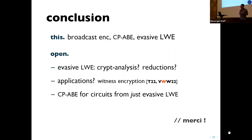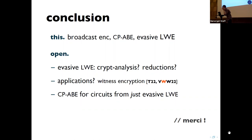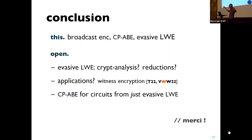We have plenty of time for questions. One question: is it possible to extend this idea to key-policy attribute-based encryption? Key-policy ABE was the punchline of my EuroCrypt talk ten years ago — the key-policy version achieves the right parameters, and with follow-up work, CP-ABE with large ciphertext size is obtained by translating KP-ABE to CP-ABE using universal circuits.